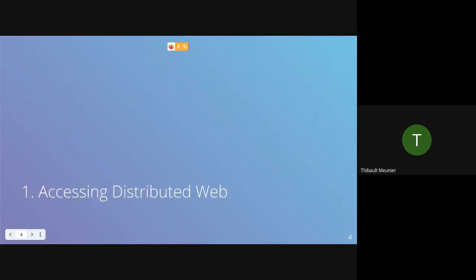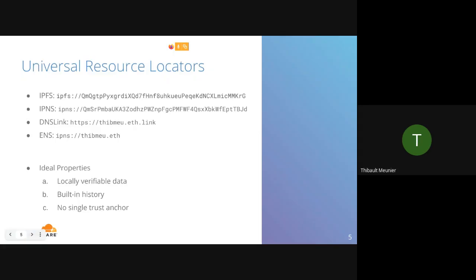Accessing the distributed web works first with universal resource locators. For IPFS you would have an IPFS hash with a CID, or an IPNS hash which is constant. The hash is not very readable, so you can use a DNS link with a DNS name. For instance, a website I've set up for tests: you could go to tmr.eth.link on HTTPS and that works.